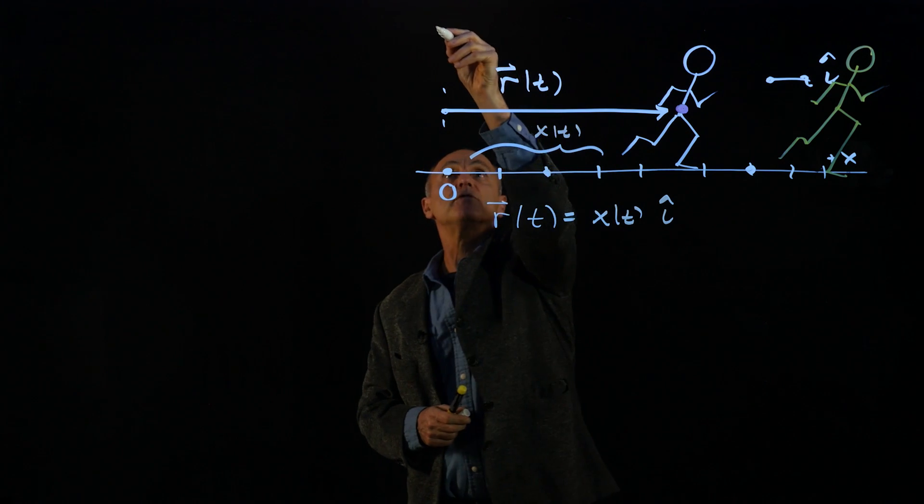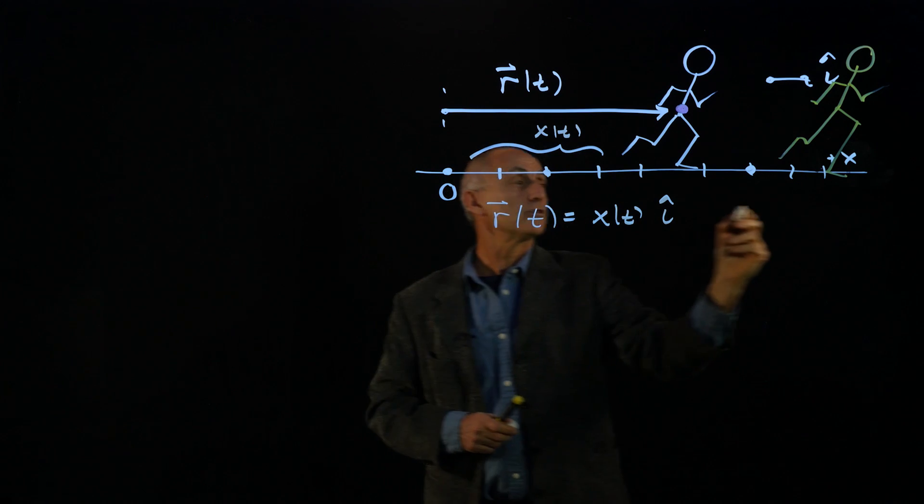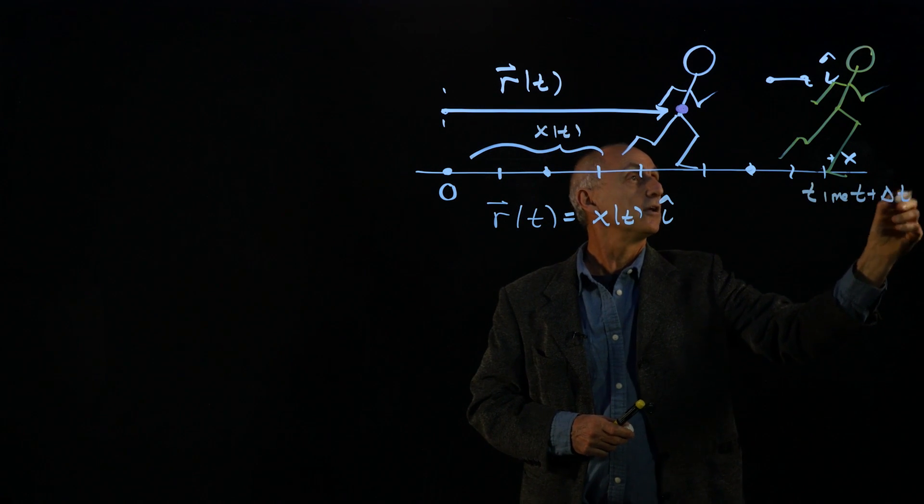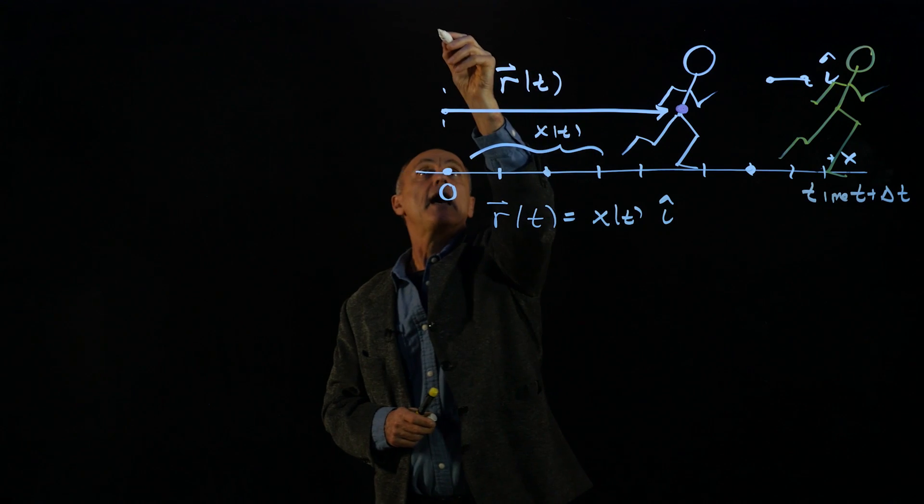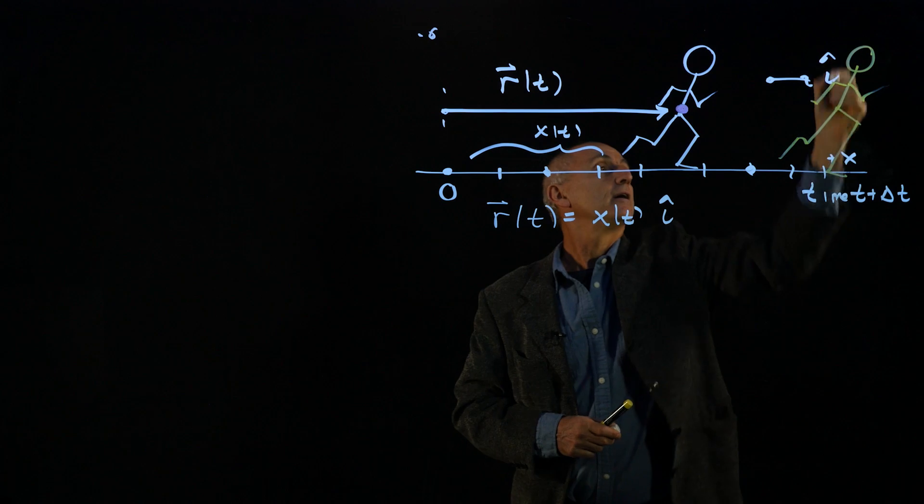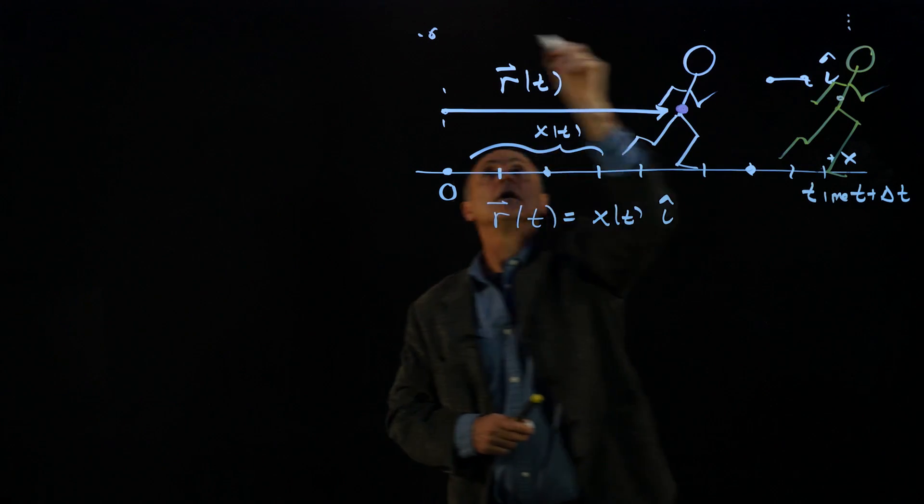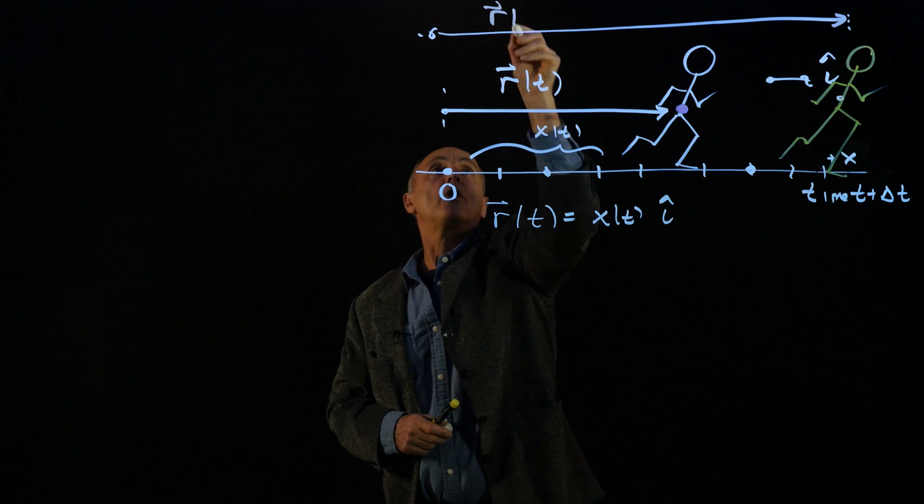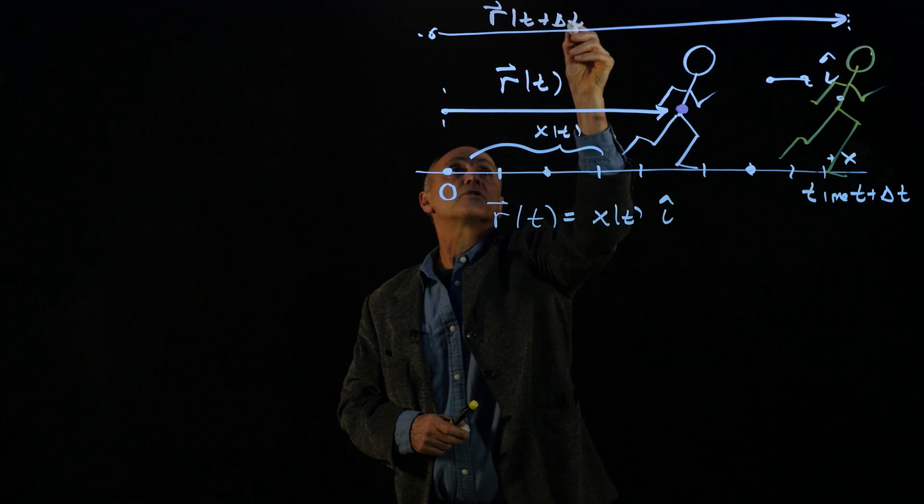Now, our position vector a little bit later, so here we're at time t plus delta t. The runner has moved a little bit. And we'll now describe the position vector, because I don't want to overlap it. That center point is up here, it's going to point in this direction. And this is what we call r(t + Δt).